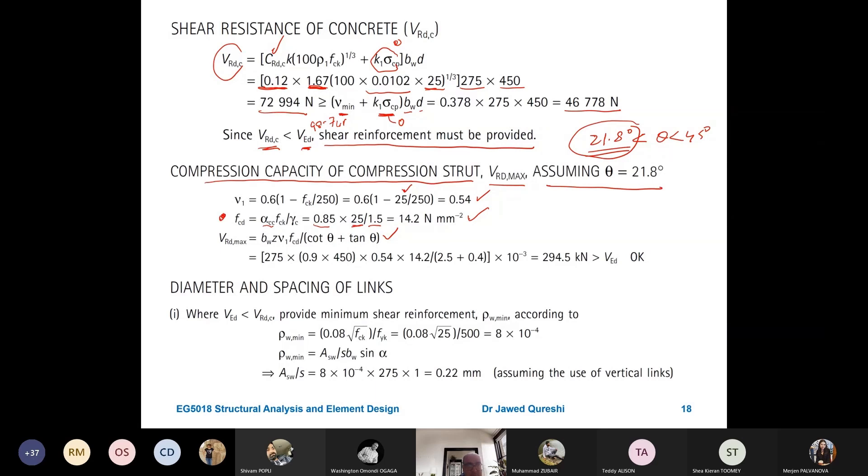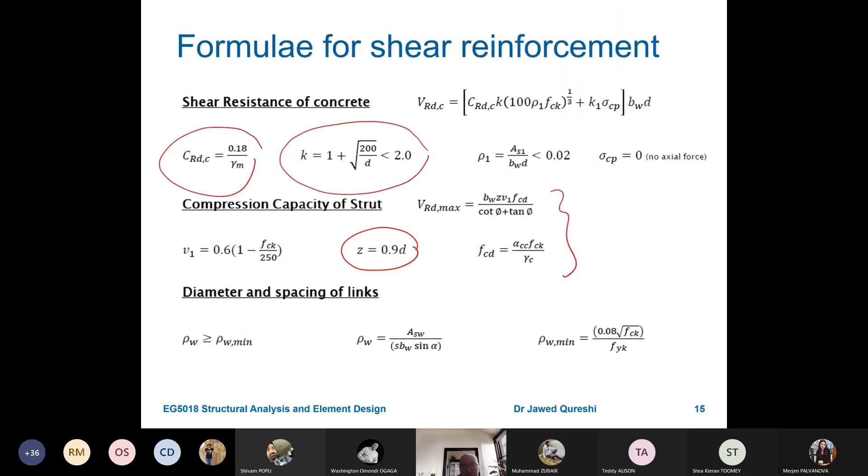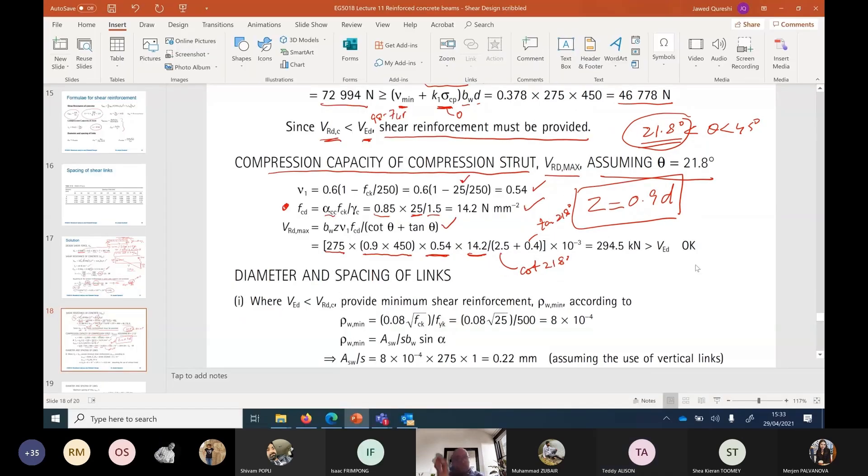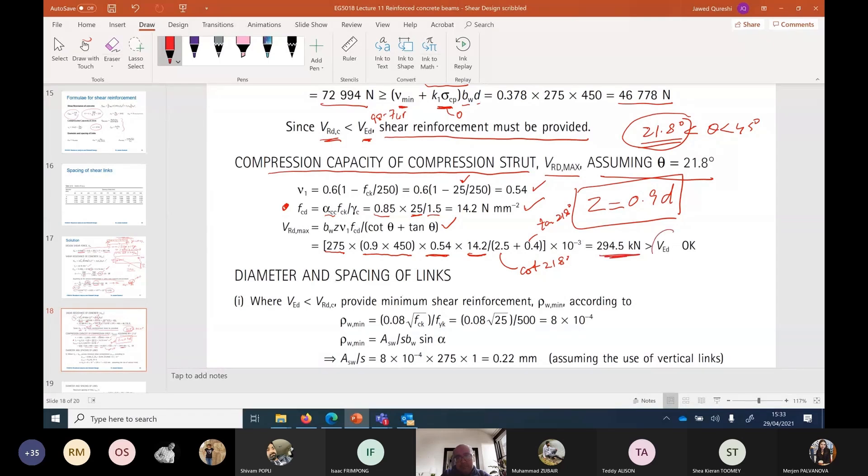BW is the width of the section. Z for shear is 0.9D. When we talk about shear, Z is going to be 0.9D. So, that's why we have this 0.9 times D. D is the effective depth. And V1 we determined. Again, you can have a look at for Z, we have this formula. And FCD we just determined divided by cot 21.8. The value of cot 21.8 and tangent 21.8 should be these. cot is inverse of tangent. So, if I find 21.8 tangent, which comes out to be 0.4. And if I inverse it, I'm getting 2.5. We have this VRD max. This is greater than VED. So, this should be fine. The capacity of compression strut is greater than VED.